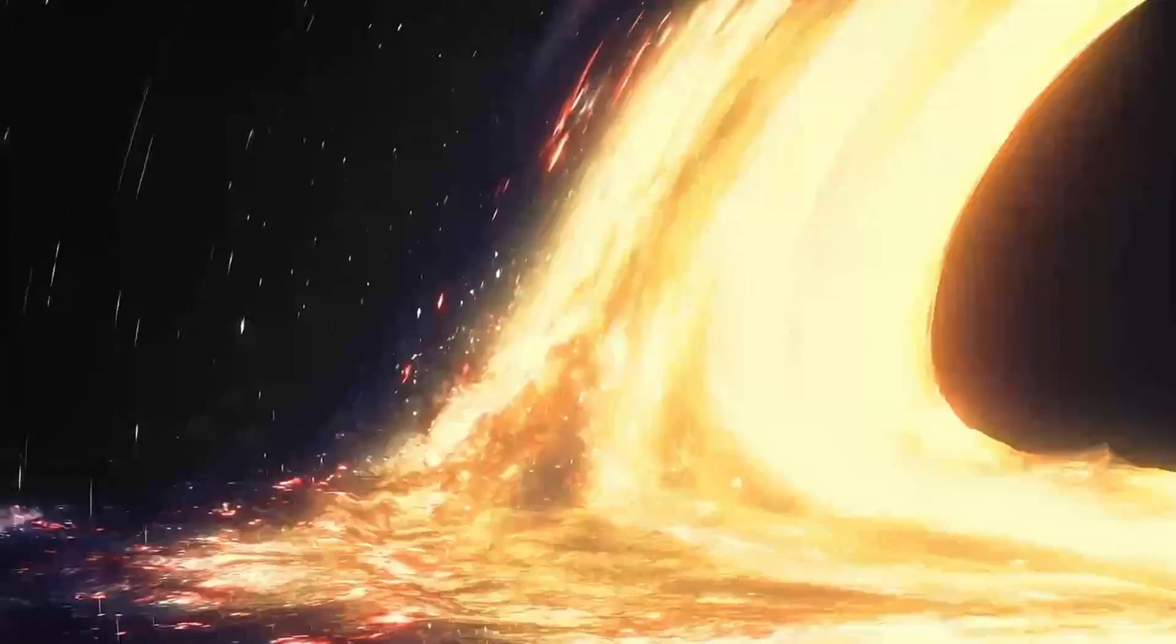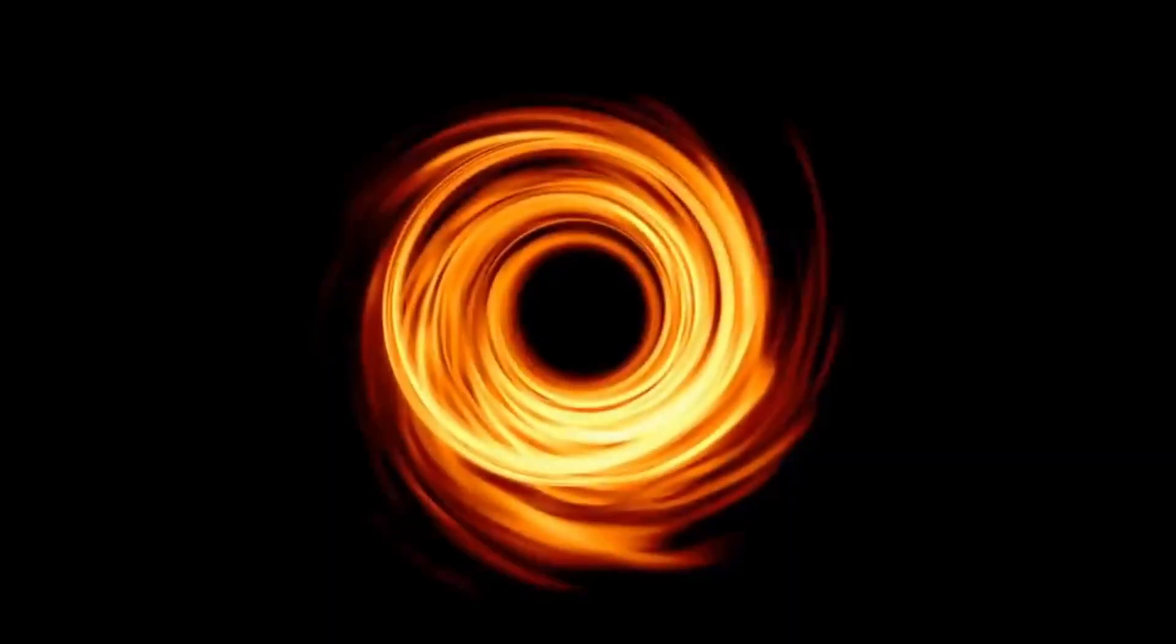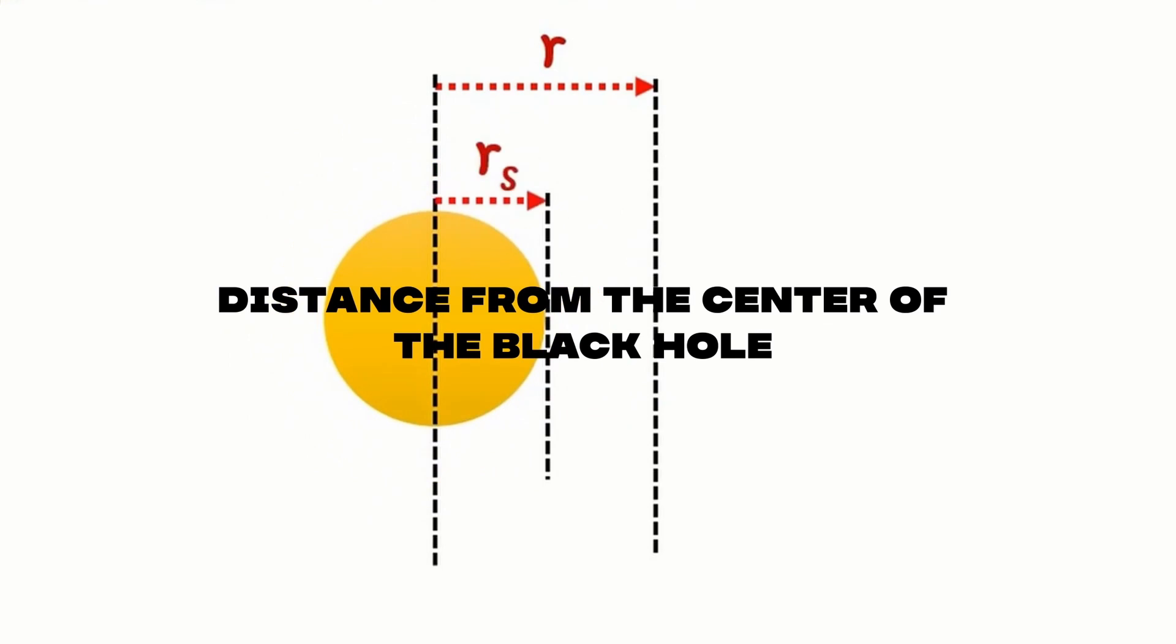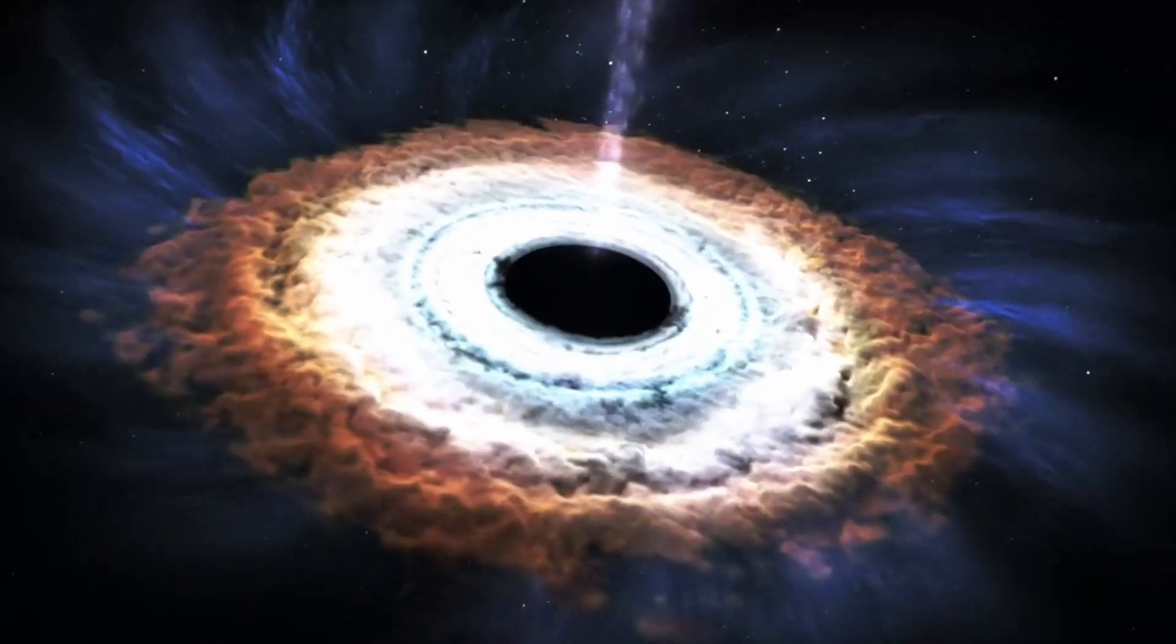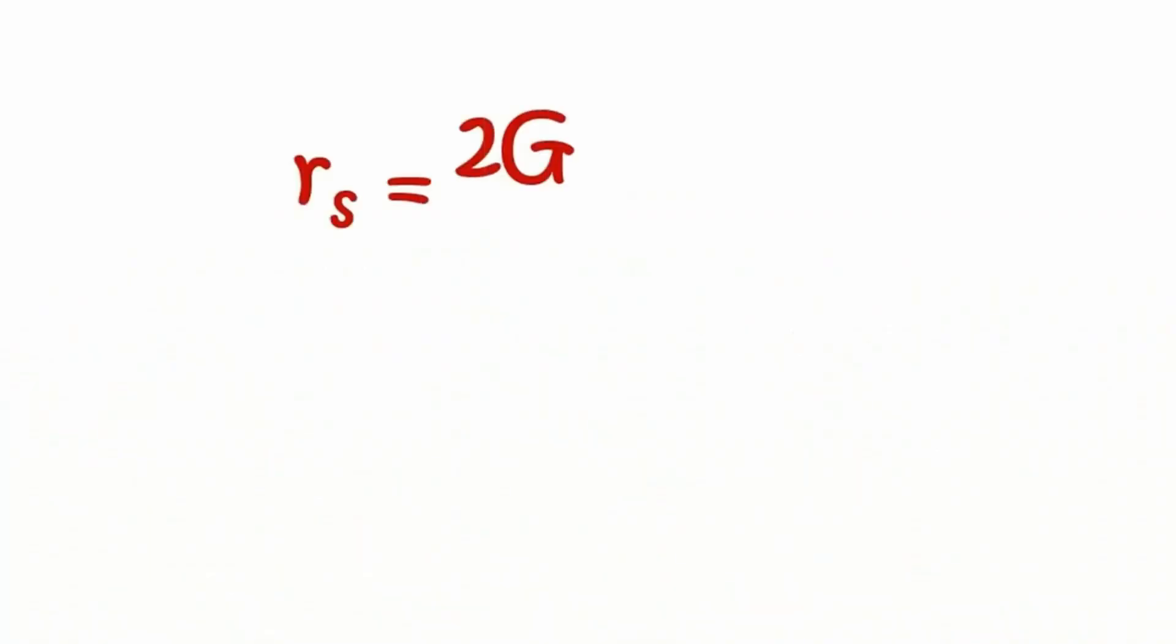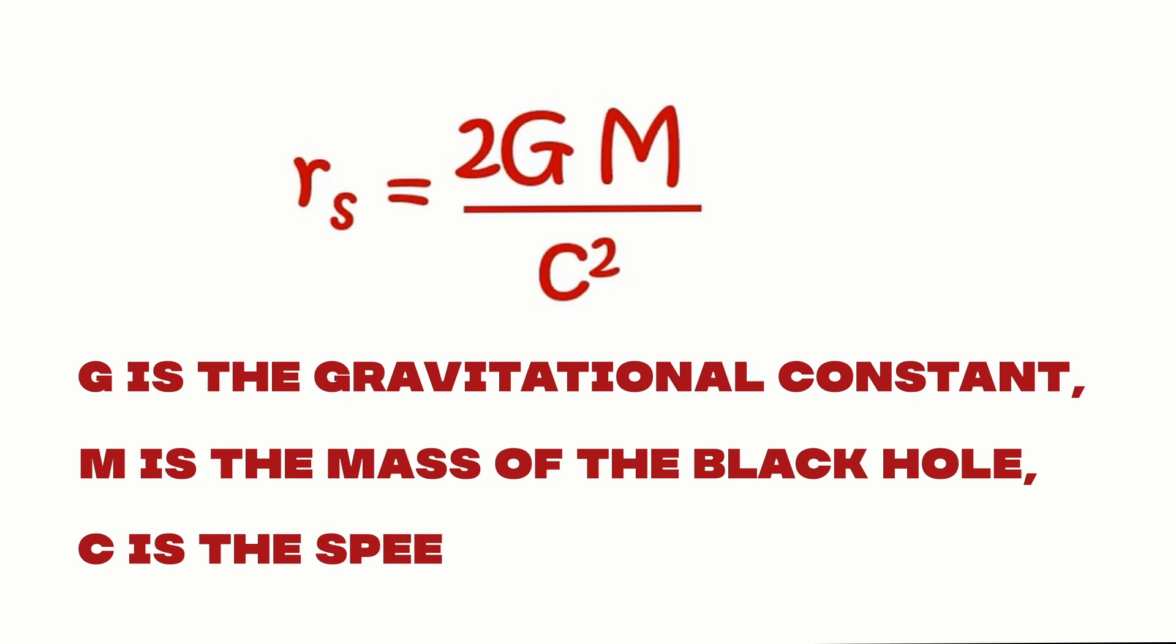The event horizon is not a physical barrier, but a theoretical boundary that marks the point of no return. It is defined by the Schwarzschild radius, which is the distance from the center of the black hole beyond which the escape velocity exceeds the speed of light. The Schwarzschild radius is given by the equation rs equals 2GM/c², where G is the gravitational constant, M is the mass of the black hole, and c is the speed of light.